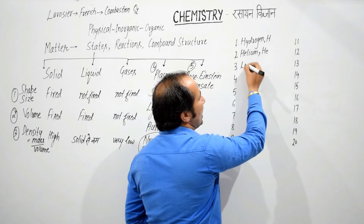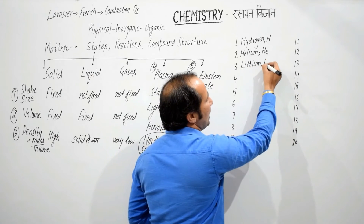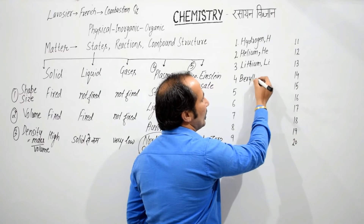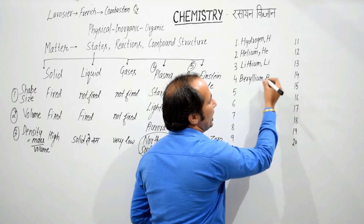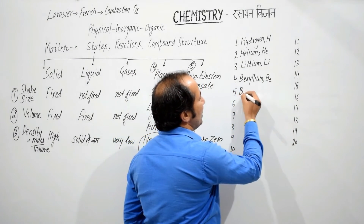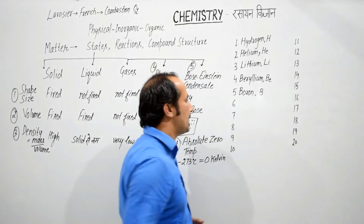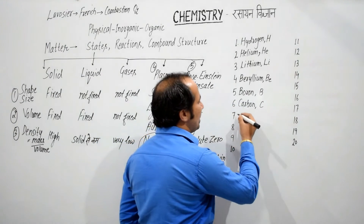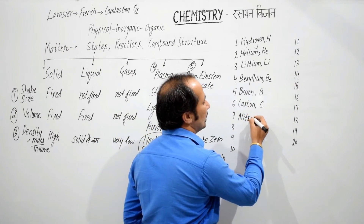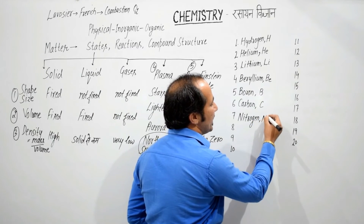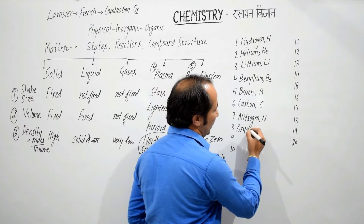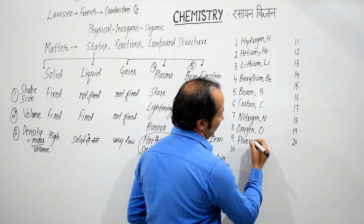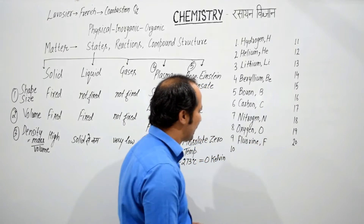Third number पर lithium — symbol capital L, small i. Fourth number — beryllium, symbol B, E. Fifth number — boron, symbol capital B. Sixth number — carbon, symbol capital C. Seventh number — nitrogen, symbol capital N. Eighth number — oxygen, symbol capital O. Ninth number — fluorine, symbol capital F.